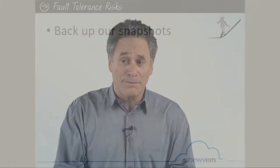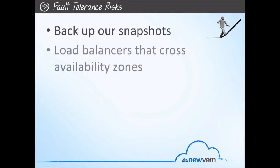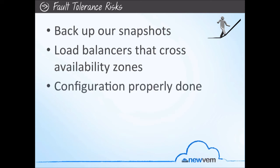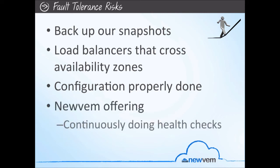Why is fault tolerance so important for the cloud? Even on-premise data centers always have outages and degradation of service, and in the past we created our ability to tolerate such situations — that's what we call fault tolerance. To become fault tolerant in the cloud, we back up our snapshots, make sure that we have load balancers that cross different availability zones, and ensure those load balancers are properly configured so that if there's an outage or degradation of service in one zone, loads are converted to another zone. At Nuvim, we continuously give you a health check of how fault tolerant your setup is to be prepared for outages and service degradations.